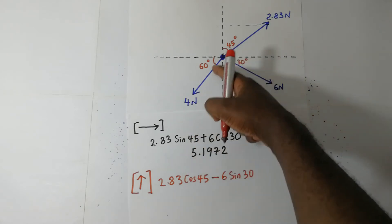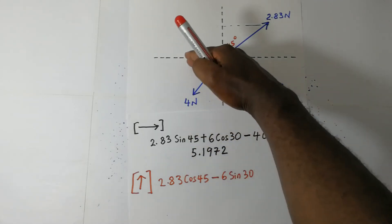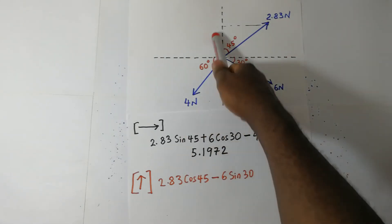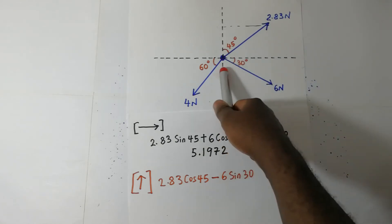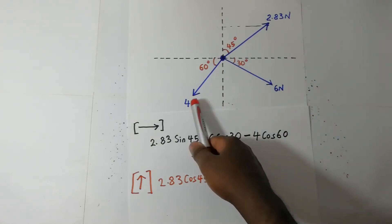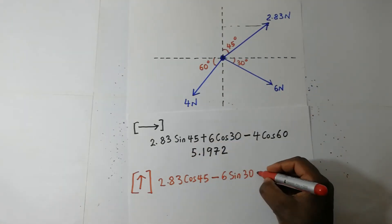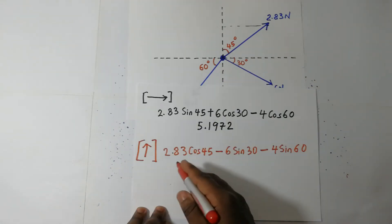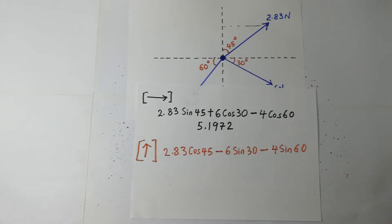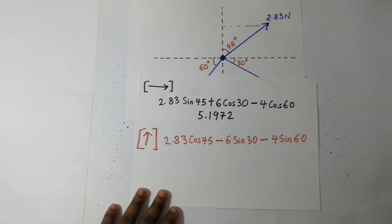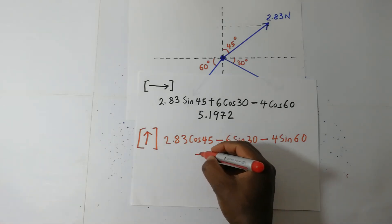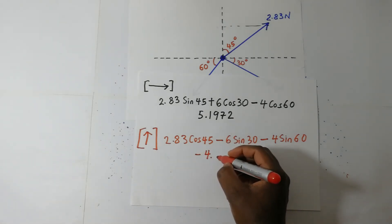Same thing here. This force is on the negative side of the Y axis — it's below — so we shall say minus 4 sine of 60. When we compute this in our calculator, we end up with a negative value. The answer is negative 4.462.